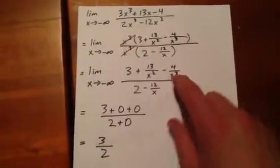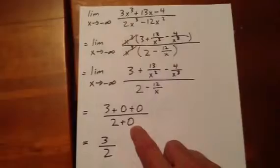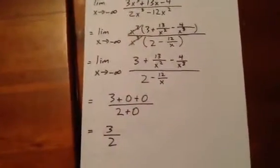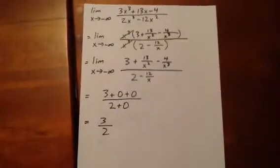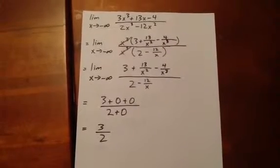A similar strategy tells us 4 over x cubed is going to get infinitely close to zero, and 12 over x is going to get infinitely close to zero. So we have 3 plus 0 plus 0 over 2 plus 0, and our answer to the limit as x goes to negative infinity of the expression given is 3 over 2.